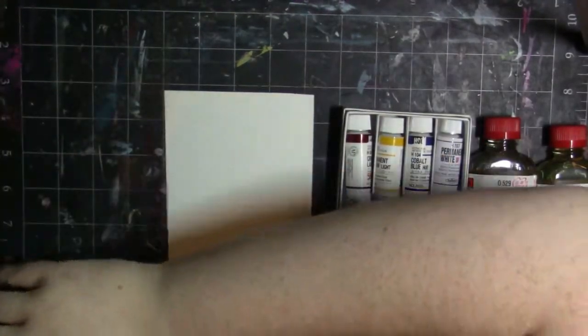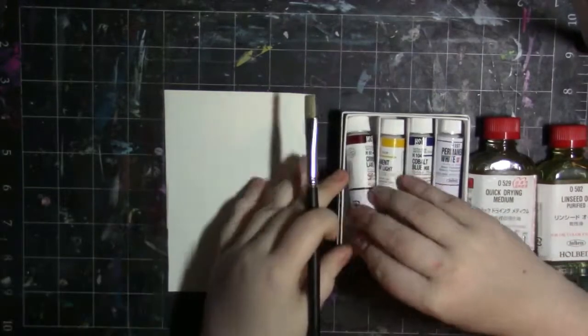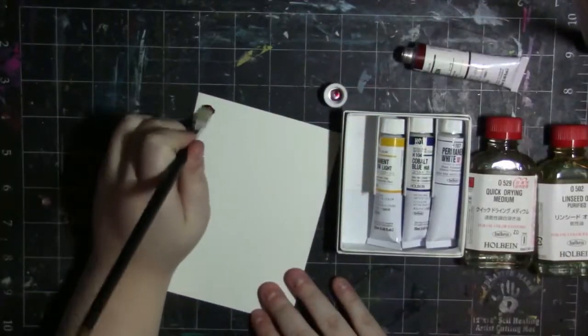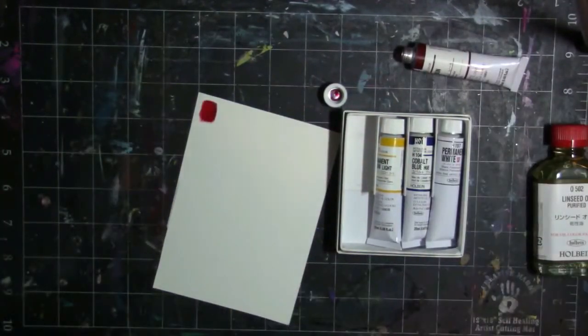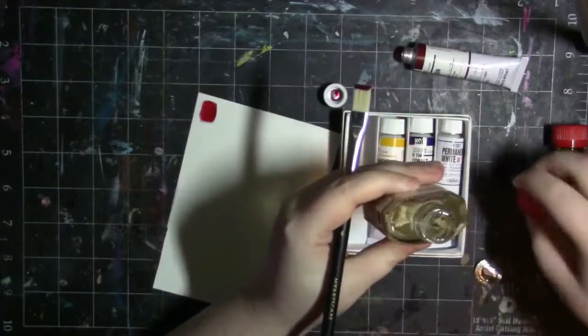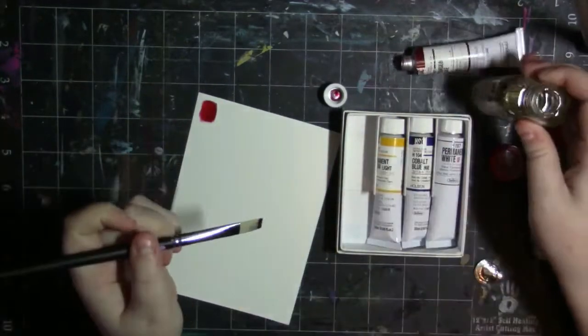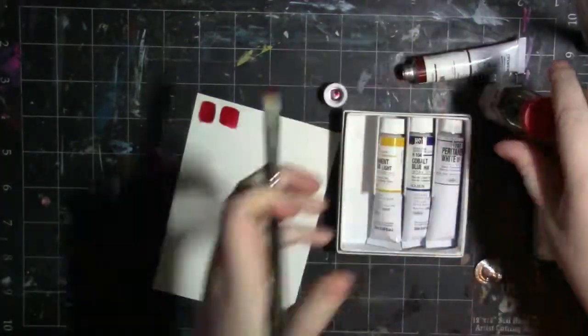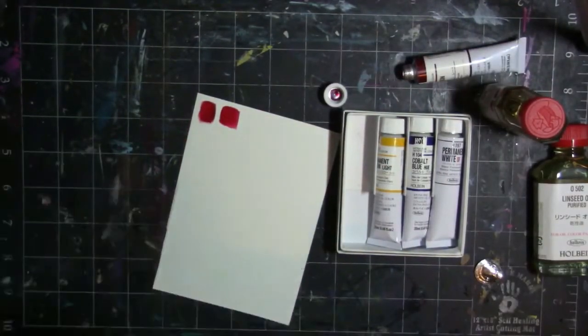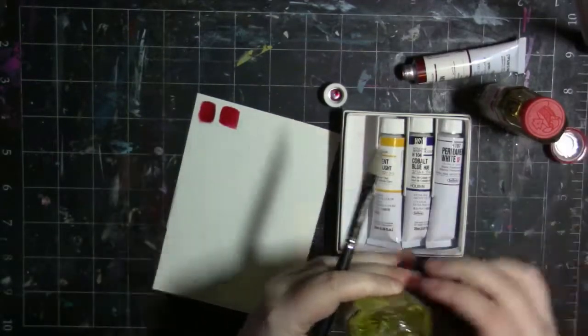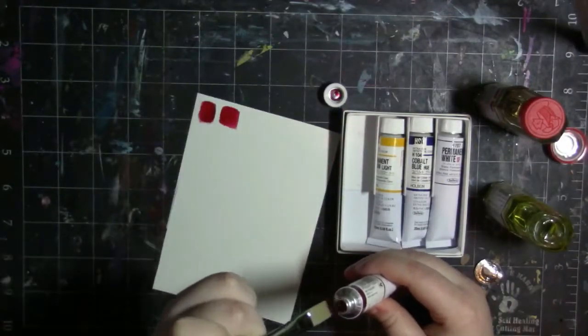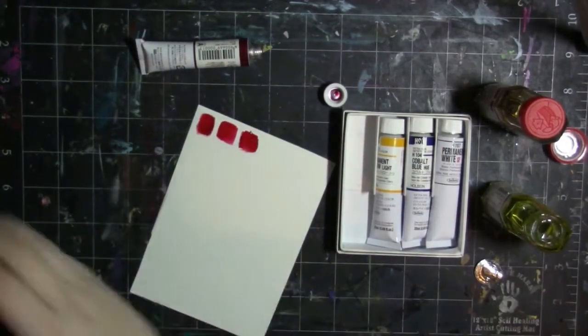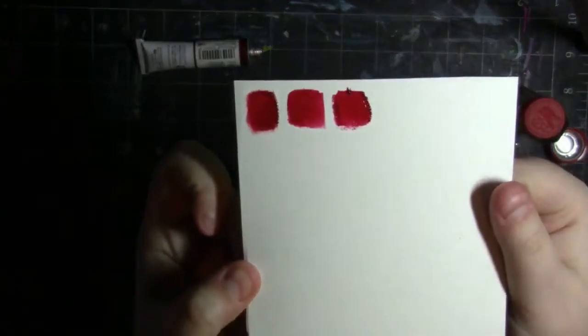Alrighty, so as you can see I am going ahead and doing the swatches first. And I started out with Crimson Lake. And I have to say all of these colors are really clean. They look extremely vibrant on the paper which is a definite bonus. I love when paints look clean. They look pure is what I'm trying to say.